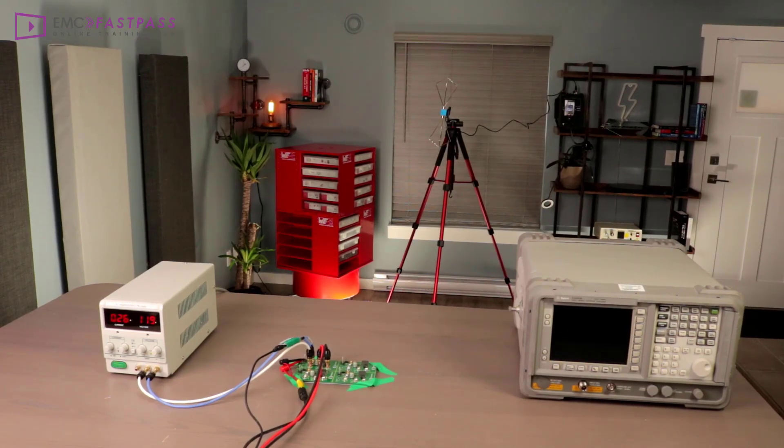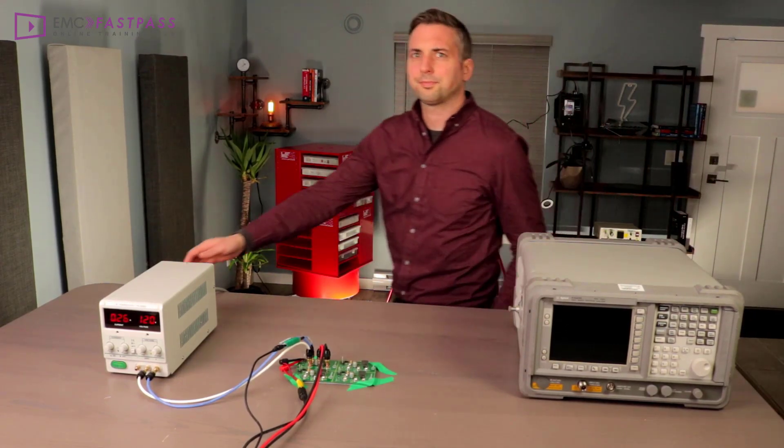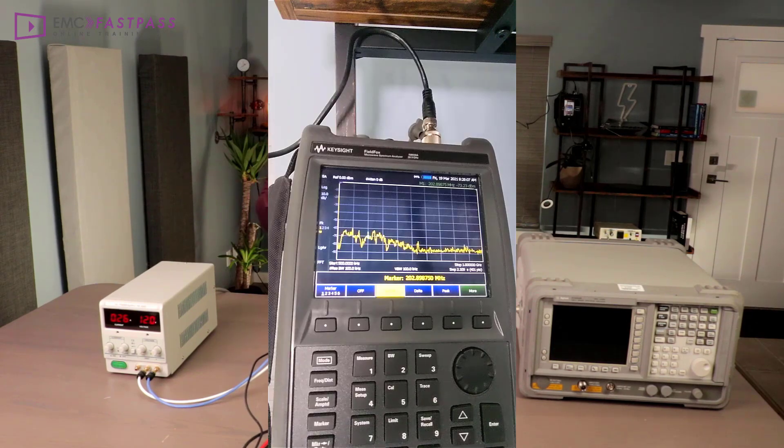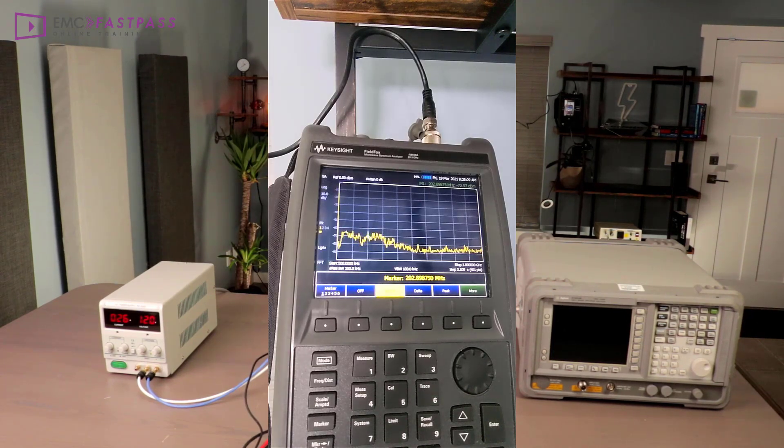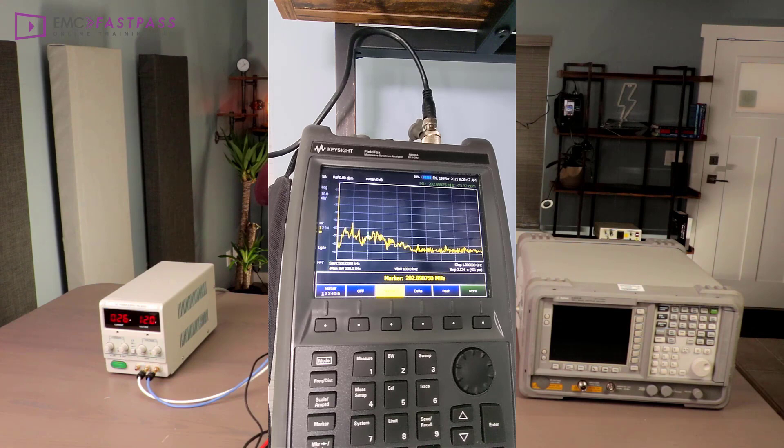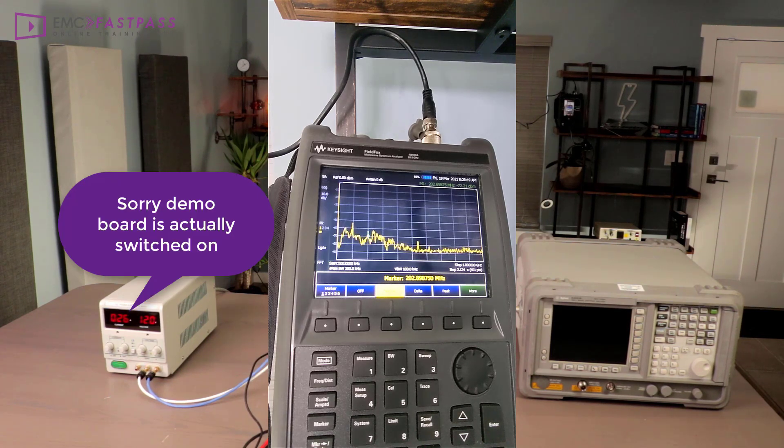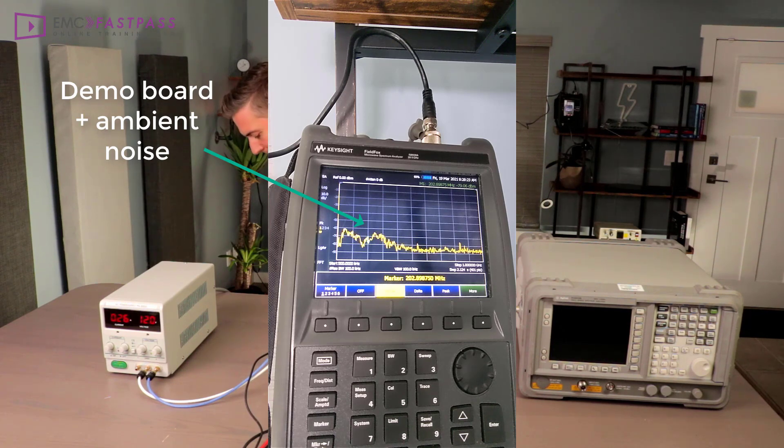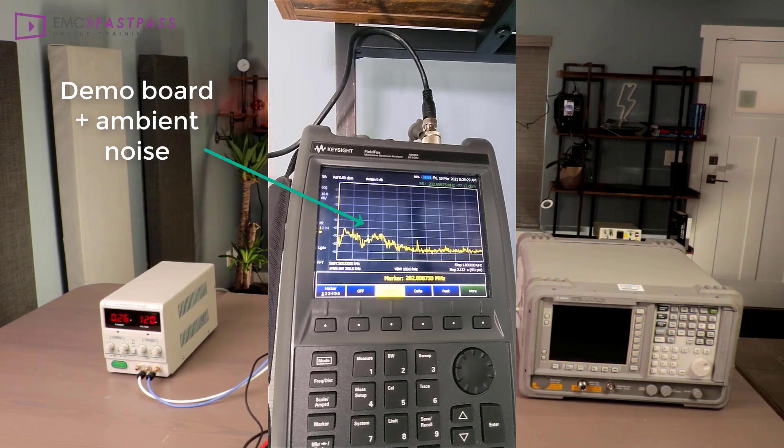Now the first thing I did here for radiated emissions testing was to lower the ambient noise levels. This is a really common problem if you're trying to make measurements in your office. As you can see here with the demo boards not even switched on, there are a ton of emissions visible on the spectrum analyzer. These could completely hide the emissions from the circuit boards we're trying to test. So we have to get that noise floor down.